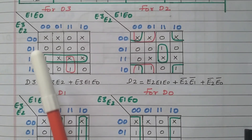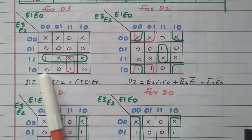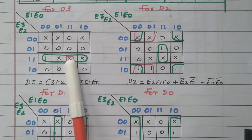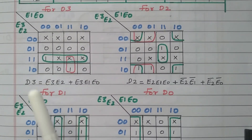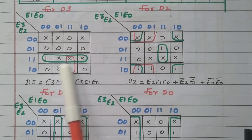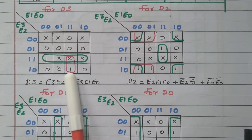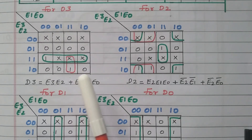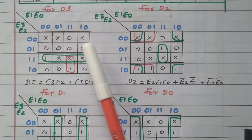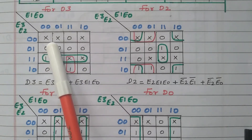Positions 0, 1, and 2 are marked as cross (don't care), and positions 13, 14, and 15 are also marked as cross (don't care). For grouping, we can use don't care conditions to form larger groups, but it is not necessary to cover all don't care conditions — uncovered don't care cells are not a problem.